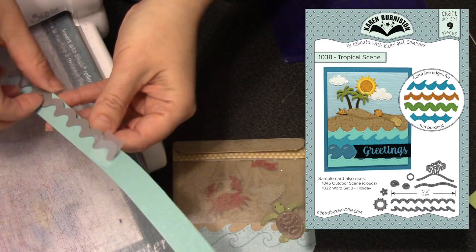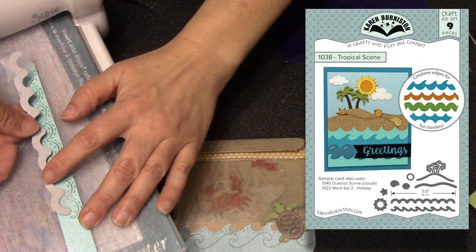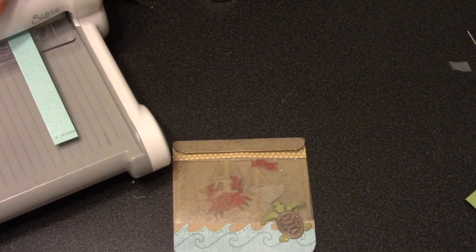Another thing you can do with the scalloped edge die from the tropical scene is to make a cool rickrack out of it. After cutting one side of the rickrack, you flip the die around and make sure all the little points are inside the scallops when you line it up. You're basically offsetting a half a scallop. Then you roll it through your machine again, and now you have that perfect rickrack.